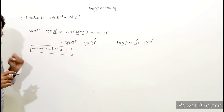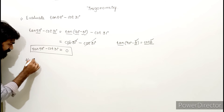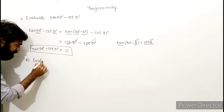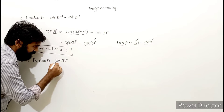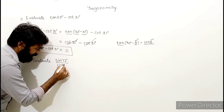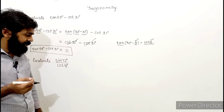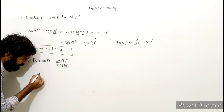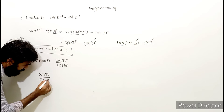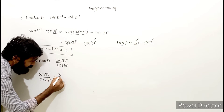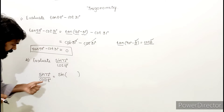Now let's see the second problem: evaluate sin 72 degrees divided by cos 18 degrees. Let's solve: sin 72 degrees divided by cos 18 degrees. I'll keep cos 18 as it is and modify sin 72.